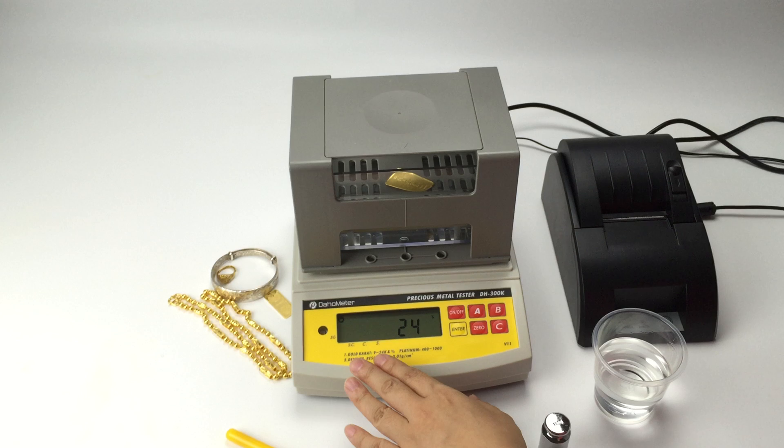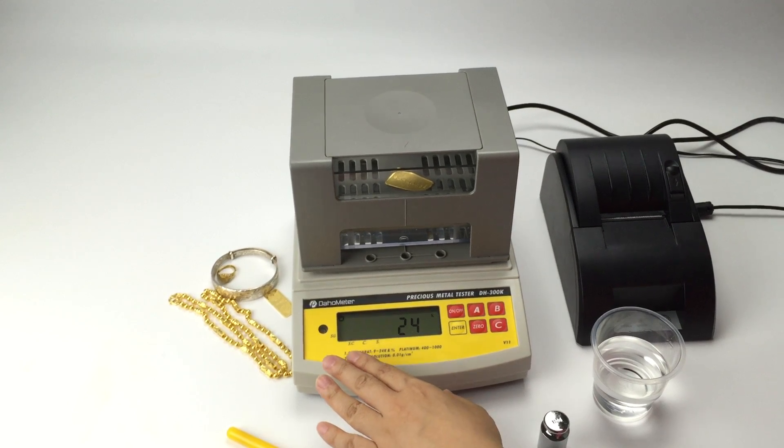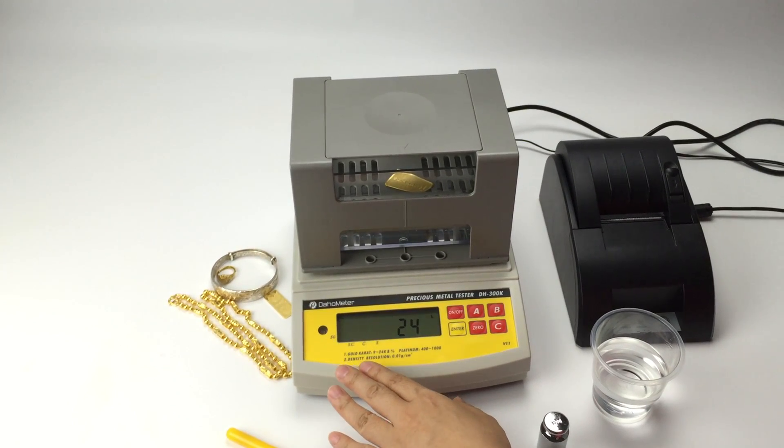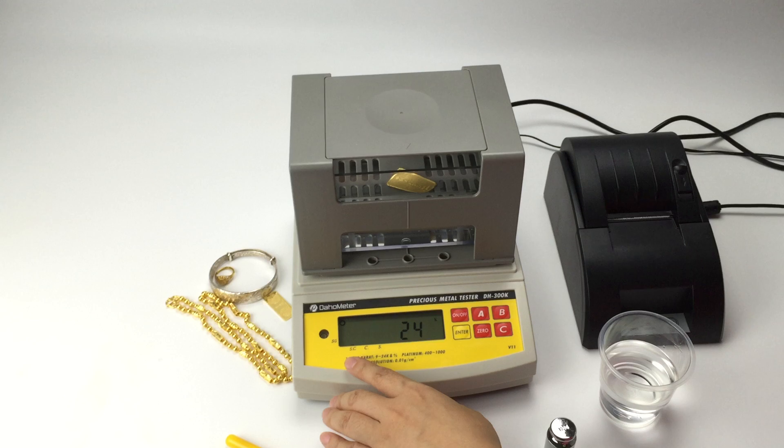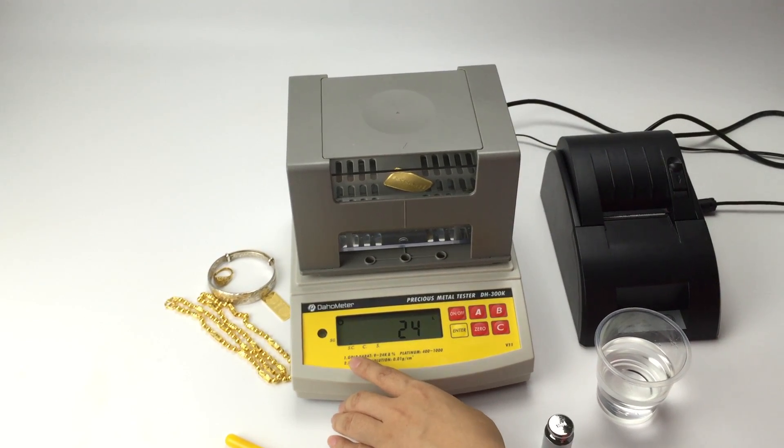24. This is the K value for gold, copper, silver. Also you can see there is arrow directed to SC.